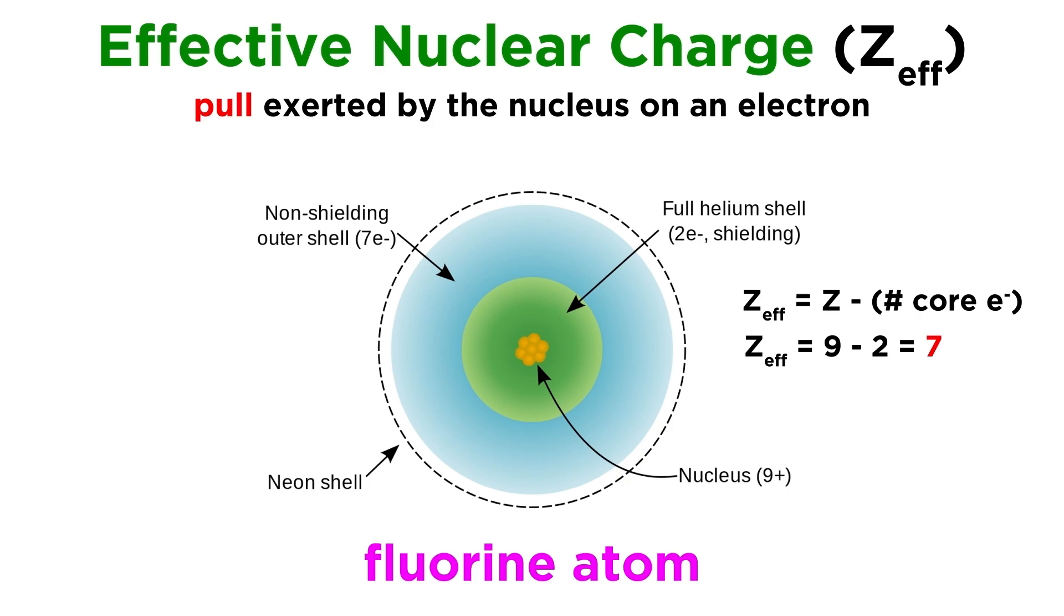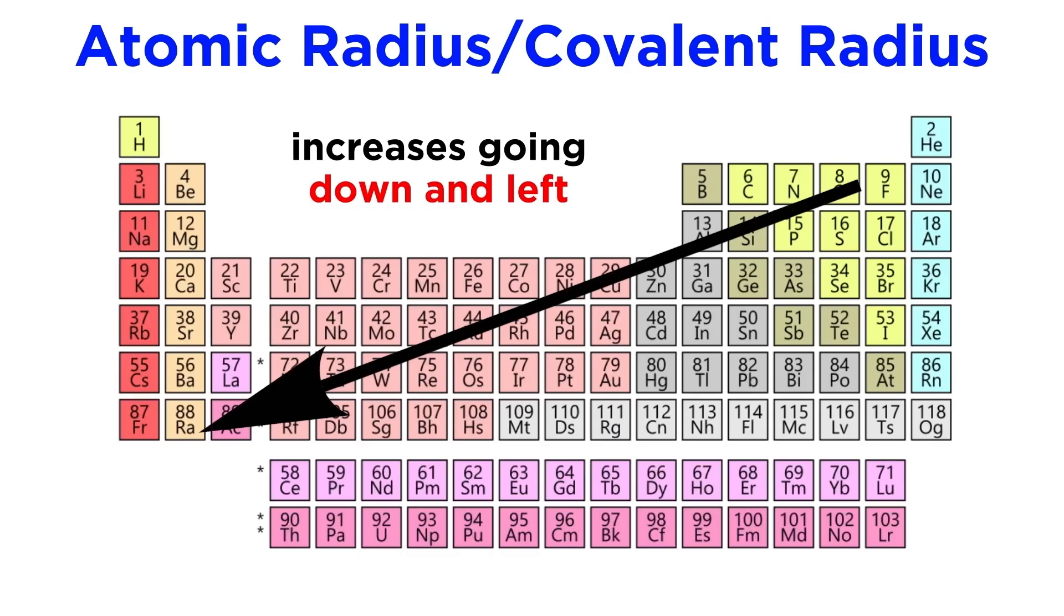So it's as though each core electron cancels out one proton to tell us the effective charge that is attracting the valence electrons to the nucleus. Valence electrons do not shield as well as core electrons do, which is why Z effective increases as we move to the right along a period, which results in a contraction of the covalent radius. We can therefore say that radius increases going down and left on the table, and decreases going up and right.